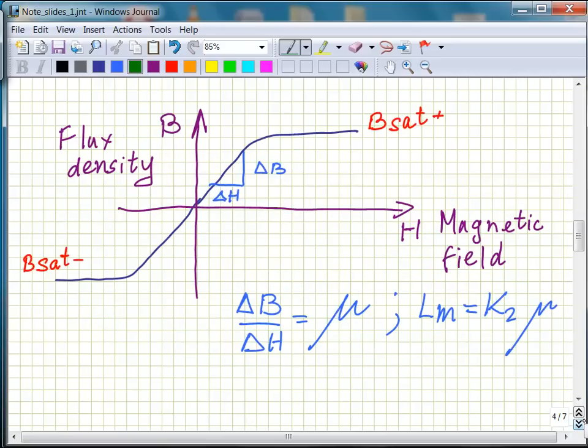Now, cores of practical transformers have a BH curve, magnetization curve. Now, B is related to the voltage, H is related to the current. Now, this BH curve, when B is the flux density, magnetic flux density, while H is the magnetic field.